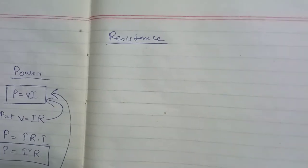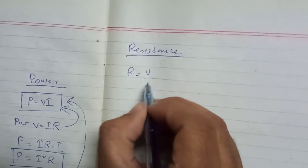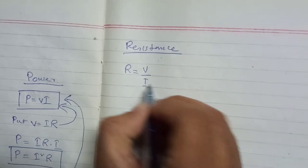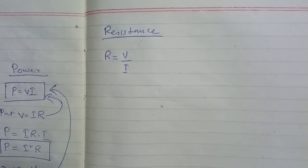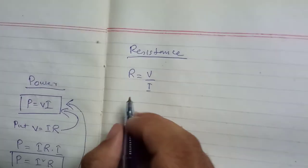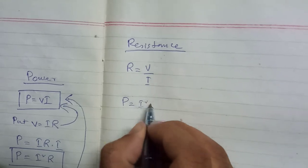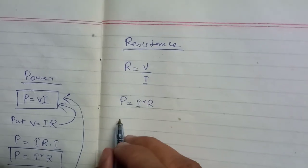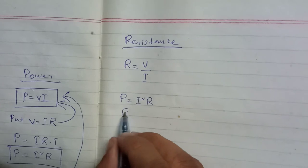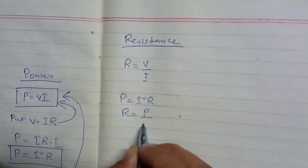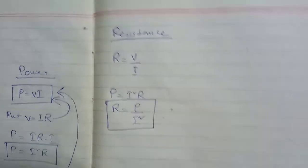The first formula for resistance is R is equal to V upon I — this is the famous Ohm's Law formula. The second formula we get from P is equal to I squared R. Just divide by I squared, so it becomes R is equal to P upon I squared. This is the second formula for resistance.